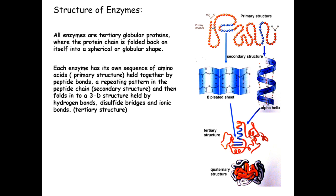Every time you hear the word peptide, that refers to a protein. The secondary structure is a repeating pattern in the peptide chain. Two examples of this might be a beta-pleated sheet or an alpha helix, similar in some cases to the shape of DNA. That secondary structure then folds in on itself to make a complex 3D structure, held together usually by hydrogen bonds and sometimes by disulfide or ionic bonds — that is known as the tertiary structure.